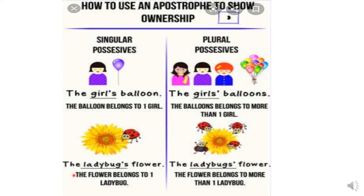Let us see some more examples to make it clear. The ladybug's flower. This is a ladybug, and this is a sunflower, so this is the flower of this ladybug — the ladybug's flower. Now, these are many ladybugs and this is only one flower, so we will write ladybugs' and we will not write S again. Ladybugs' flower. Here, we have just one flower.